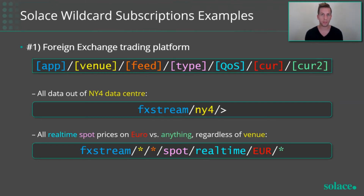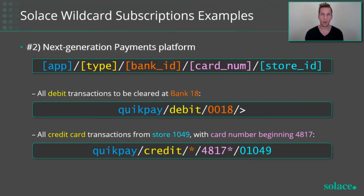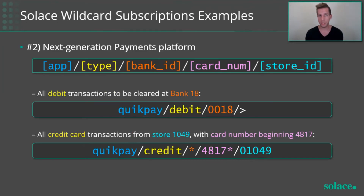For our payments platform, say you need to set up a new B2B channel for a new bank that's joined the platform. If that bank is assigned ID number 18, it's easy to configure a subscription as an async API connection so all debit card transactions destined for that bank get sent to them regardless of which store they're coming from. Or, if you've noticed unusual behavior from a particular store — store 1049 — you can listen to all credit card transactions for that store whose card numbers start with 4817, using the prefix wildcard.